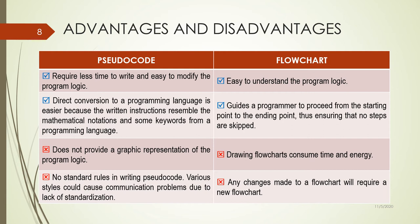For pseudocode, it requires less time to write, it is easily modified, and the direct conversion to a programming language is easier. The written instructions resemble mathematical notation, and programmers understand better when instructions are written in pseudocode, since they can be represented directly into code.